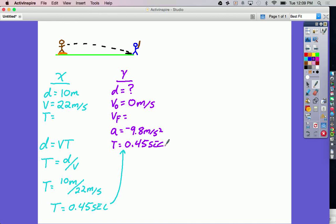Now I can pick a kinematics equation, which will get me my d in the y direction. The only blank spot is vf, so I want to pick the equation that does not have vf in it, and that is d equals v0t plus one half at squared.